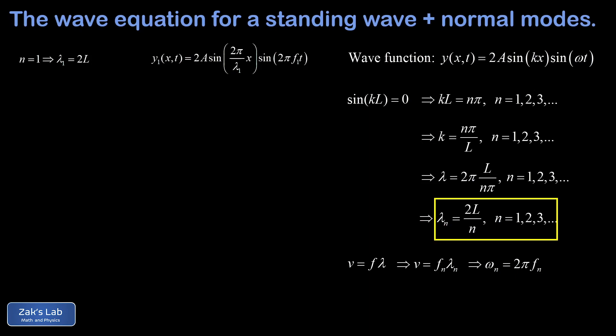And here's the explicit wave function for this standing wave. We just subbed in that k is 2π over λ1, and ω is 2π times f1. And this standing wave is called the fundamental or the first harmonic for the string. So here's what it looks like.